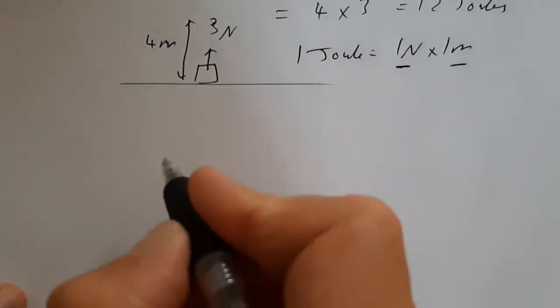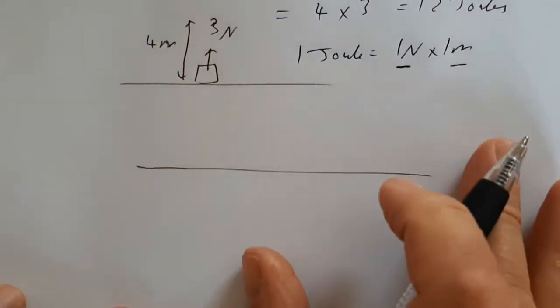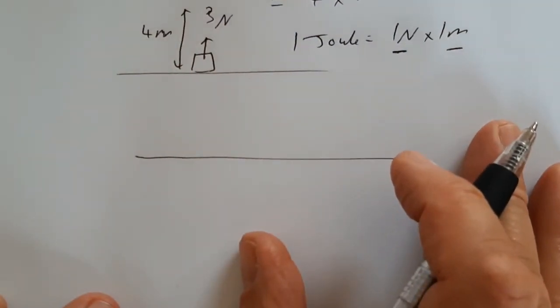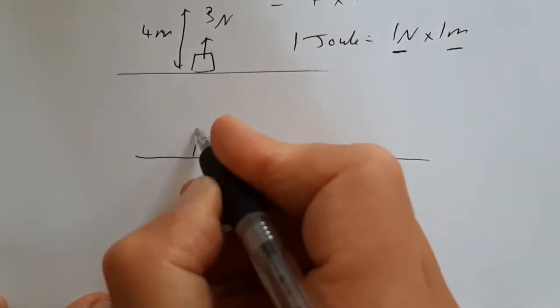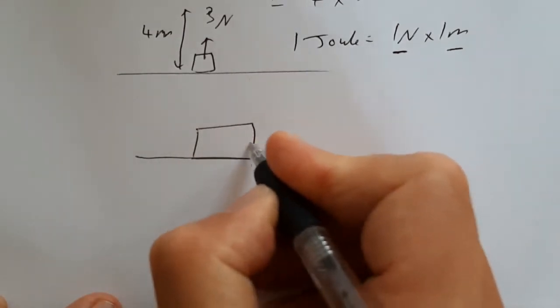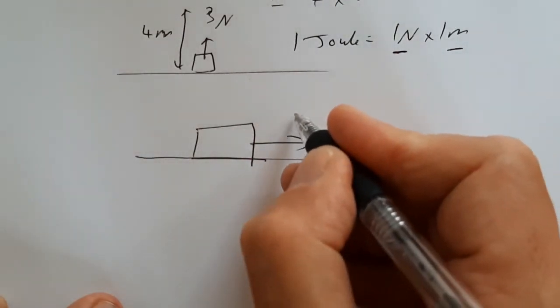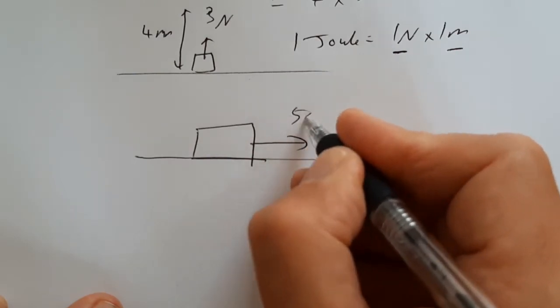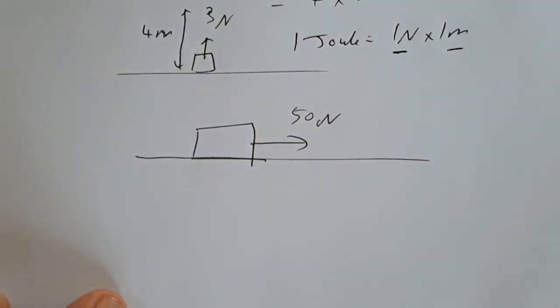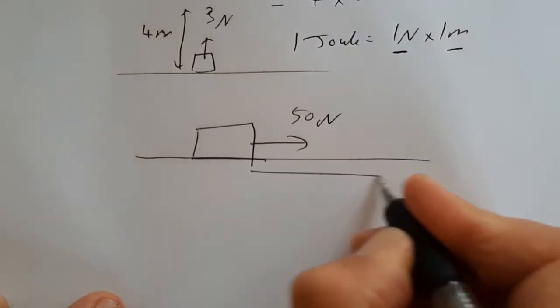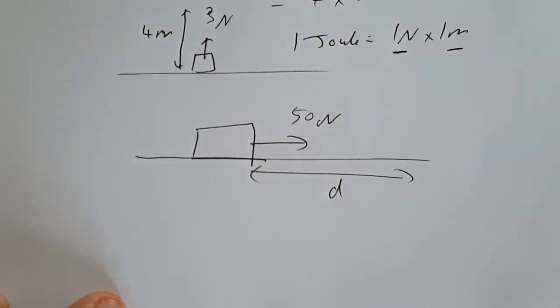Let's just try a different example. Introduce the idea of rearranging as well. So let's imagine we're trying to drag a block and we need a force of 50 newtons to drag our block along the flat. And we want to know what distance D can we drag that block if we're using, if we have a store of energy, if our energy available is 300 joules.